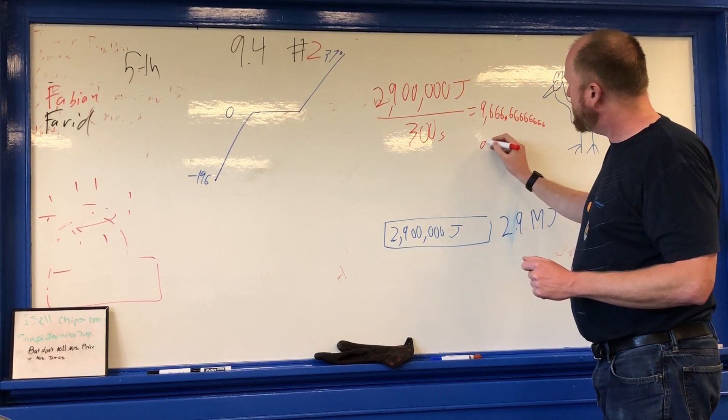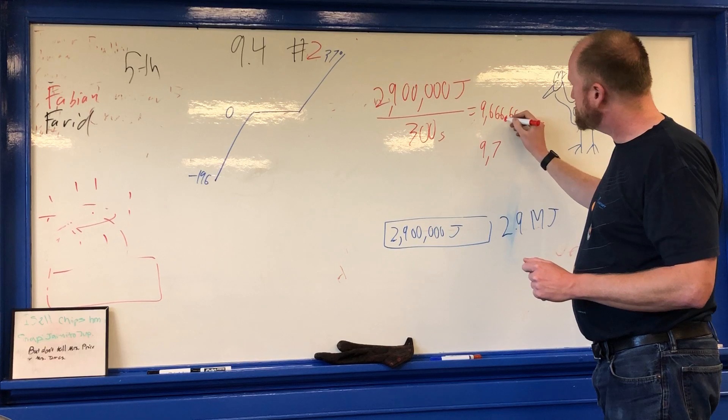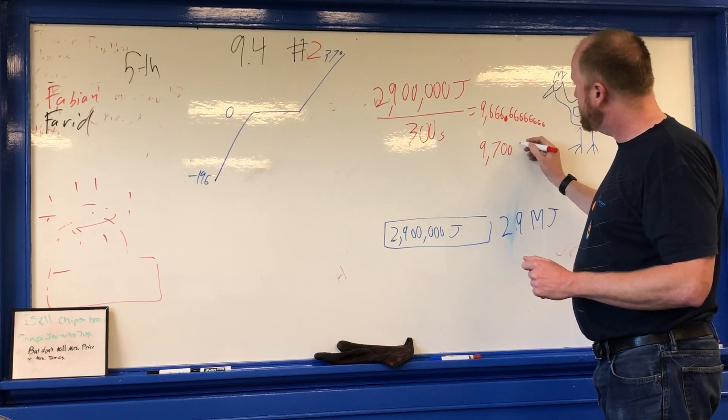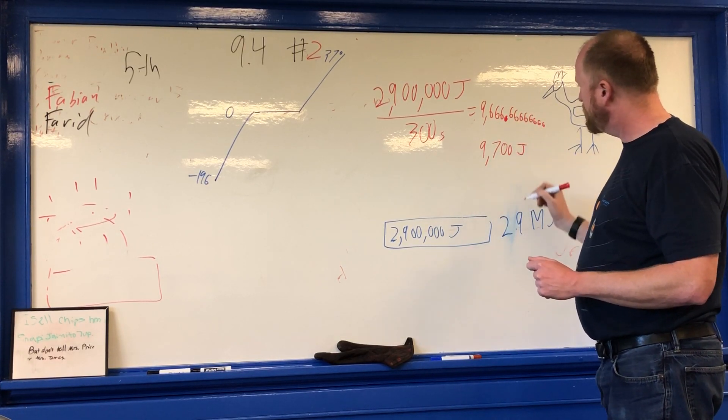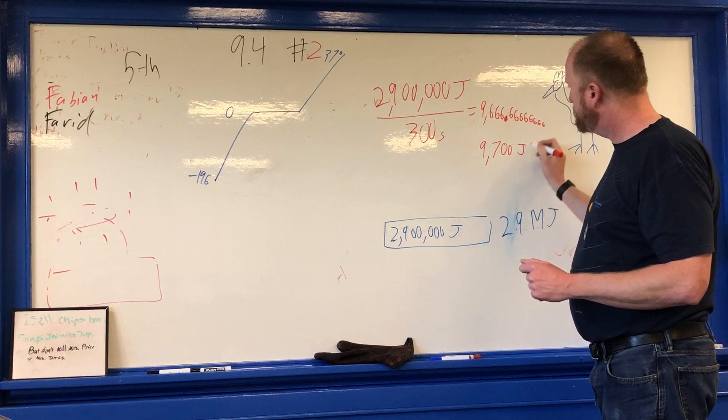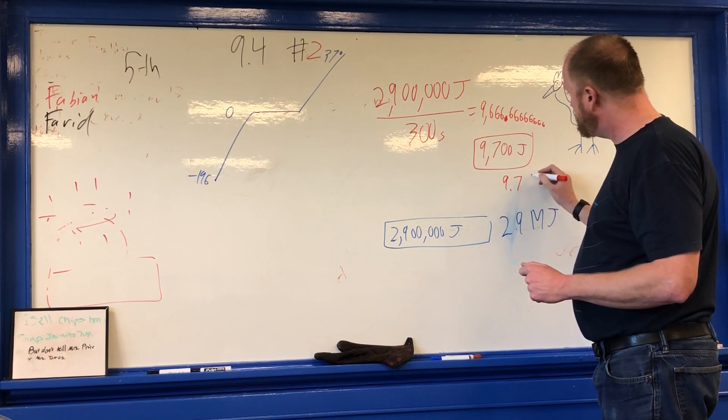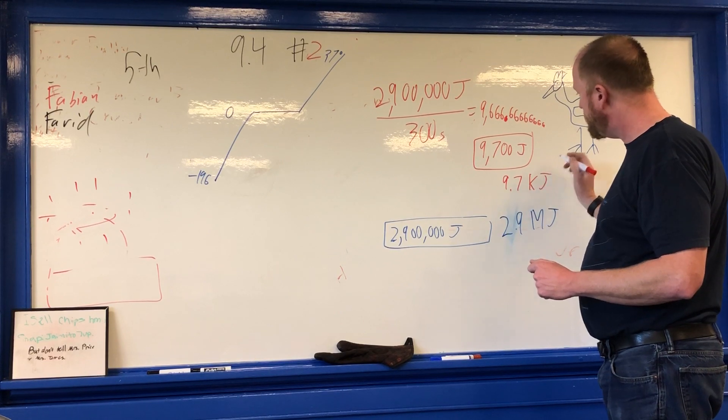So, I end up with 9,700, that's a decimal, by the way, 9,700 joules. Or, if you prefer, 9.7 kilojoules. Either way is fine.